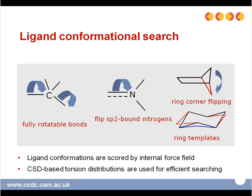Let us consider how the ligand is searched for different conformations during docking. GOLD inherently deals with ligand flexibility, including fully rotatable bonds, the flipping of planar nitrogens, and ring corner flipping. There is also a ring templates option — a new option which allows the sampling of ring conformations derived from the CSD, or user-defined, during the docking run. Using this knowledge-based ring geometry library has been shown to improve both pose prediction and score. Ligand conformations can also be scored by an internal force field, referred to as an internal energy offset.